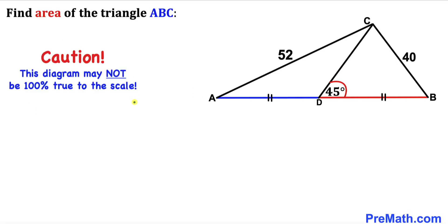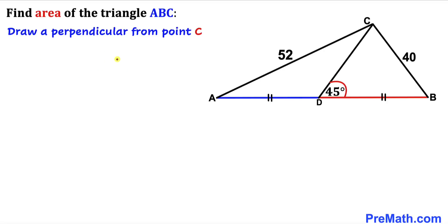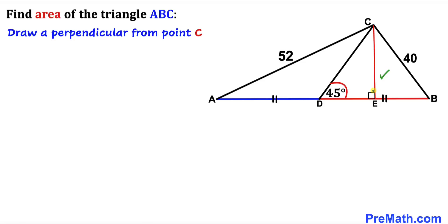Please keep in mind that this figure may not be 100% true to scale. Let's get started. We'll drop a perpendicular from point C onto the horizontal line AB, giving us a 90-degree angle. Let's label this perpendicular CE as our height, lowercase h, and now let's focus on right triangle DEC.